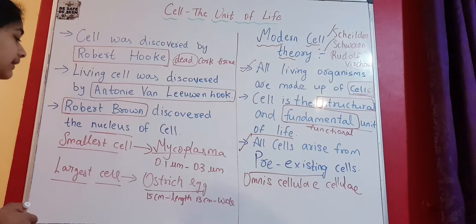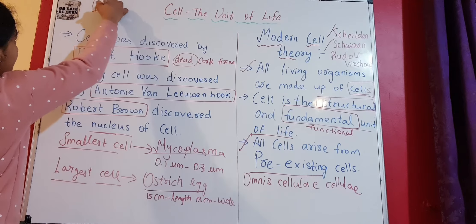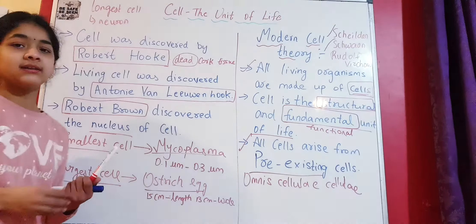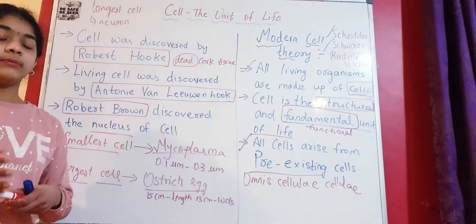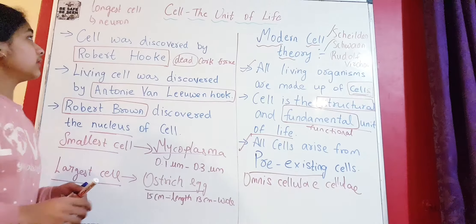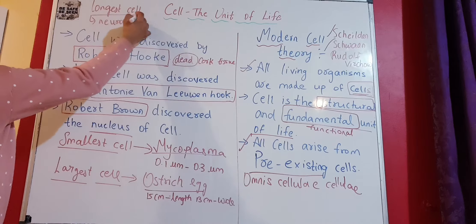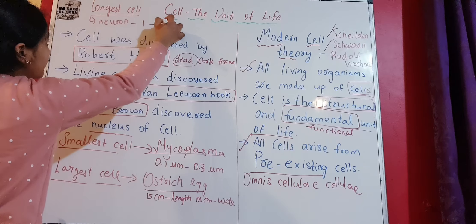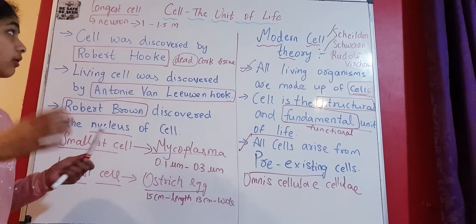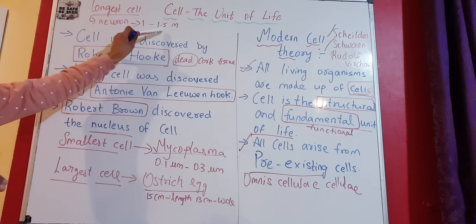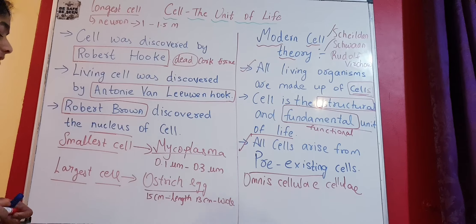The longest cell is the neuron, which is the nerve cell. Neurons help in the transmission of signals and messages from any organ — sensory or otherwise — to our brain. The size of a neuron is 1 to 1.5 meters. So the largest cell is the ostrich egg, but the longest in terms of length is the neuron at 1 to 1.5 meters.